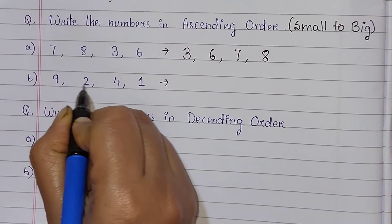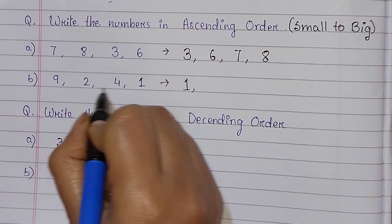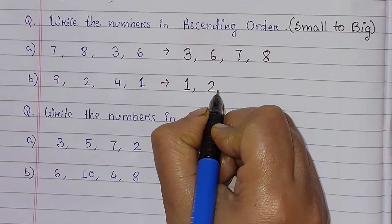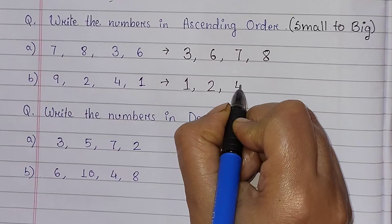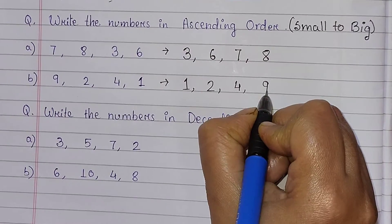Next question, first check 1 is small. Then 2. Then again check, it is 4. And the last number is, last digit, 9.